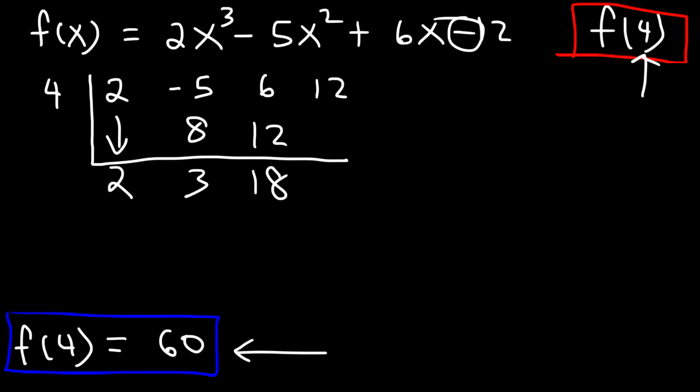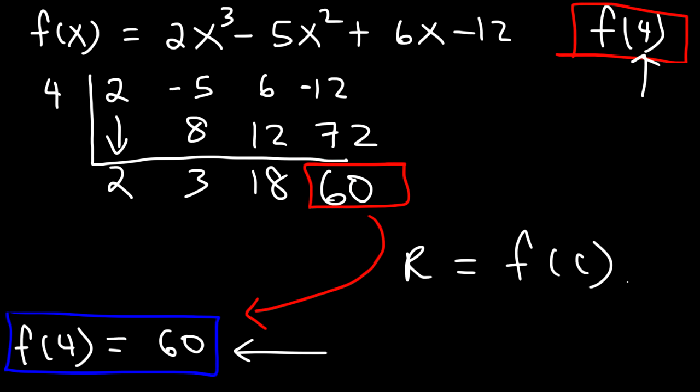Oh, by the way, this should be negative 12. I almost forgot the negative sign, so let's put that there. Now what's 4 times 18? 4 times 10 is 40. 4 times 8 is 32. 40 plus 32 is 72. And negative 12 plus 72 is 60. So as you can see, the remainder is 60. So the remainder for synthetic division is equal to the value of the function at x equals 4. So the remainder is the same as f of c. 60 is equal to f of 4.